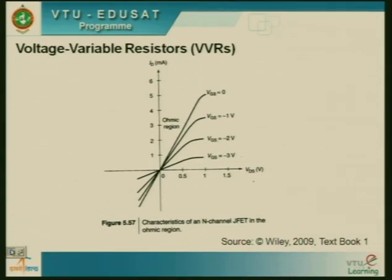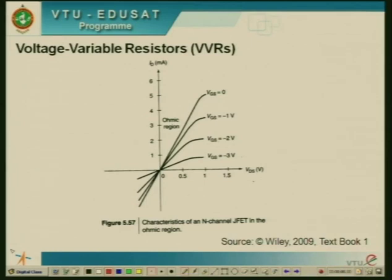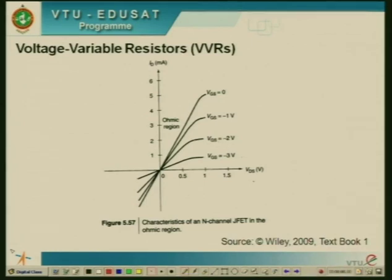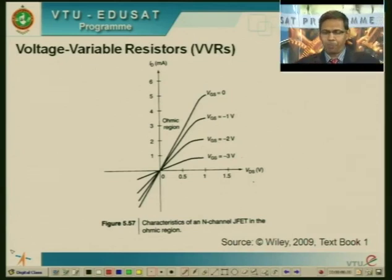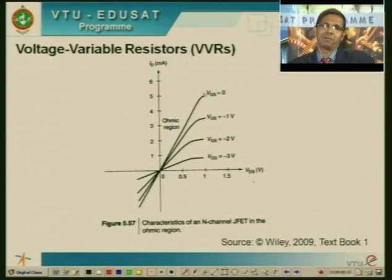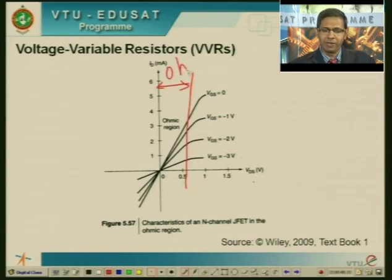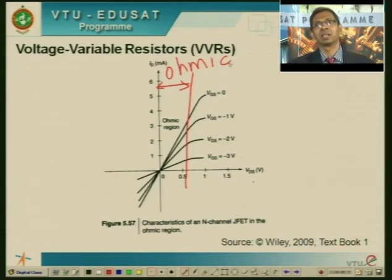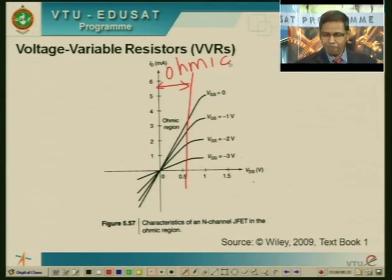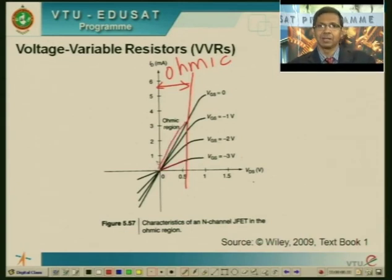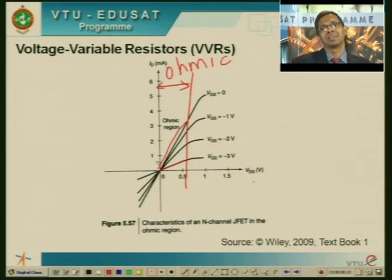Going back to this output curve — a plot of VDS versus ID for different values of VGS. As long as we are in smaller values of VDS, what we call the ohmic region, the shape of this curve is very linear, and you can change the slope by simply changing the control voltage at the gate. At VGS equal to 0, this is the curve. At VGS equal to minus 3, this is a different curve. We now have two different sets of resistors because we have two different slopes for this curve.